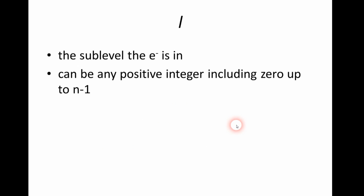L, which is also called the azimuthal quantum number, is the sublevel the electron is in. It can be any positive integer, including zero, up to N minus one. So if L equals zero, the electron would be in the S sublevel, and if L equals one, the electron would be in the P sublevel, and so on.